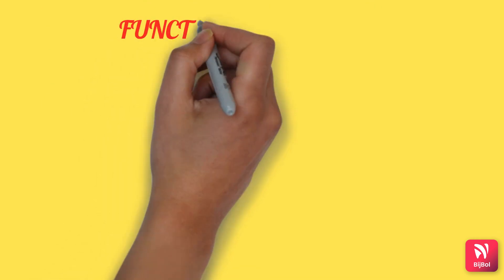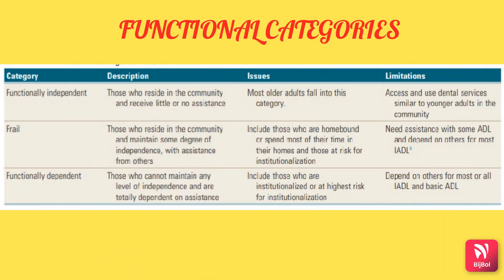Now we look at functional categories of older adults. The first category is functionally independent — these older adults reside in a community and need very little or no assistance from others for daily activities. The second category is frail — these older adults reside in a community but need assistance from others for activities of daily living like bathing, dressing, and transportation. The third category is functionally dependent — these older adults are institutionalized and do not maintain any degree of independence, depending on others for all activities of daily living.